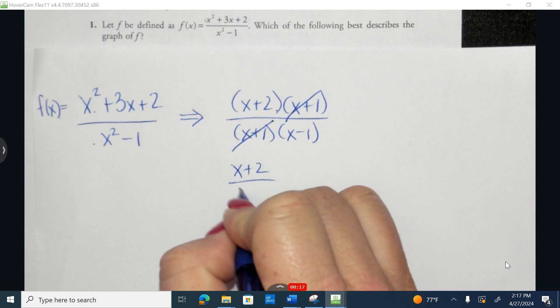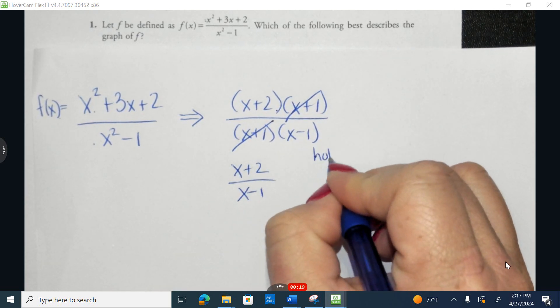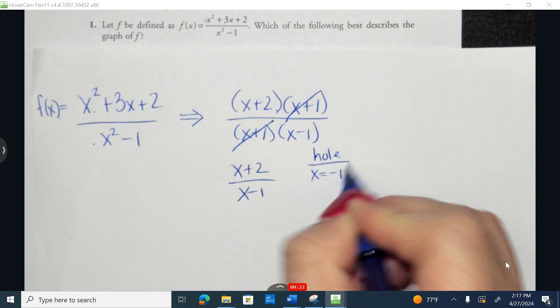And I'm left with x plus 2 over x minus 1. I already know there's going to be a hole in the graph at x equals negative 1.